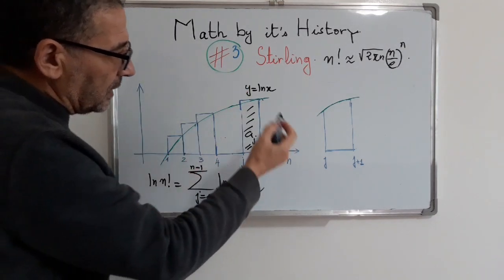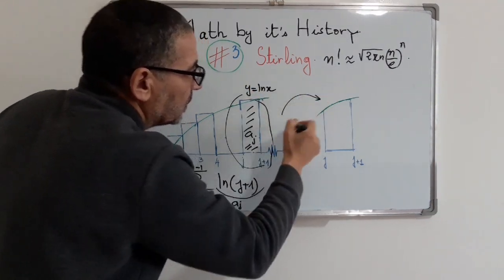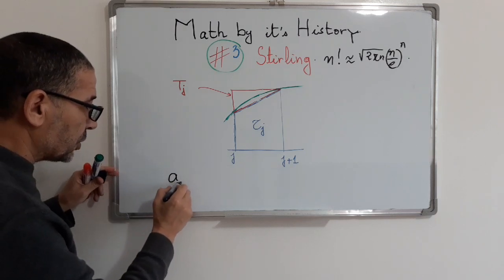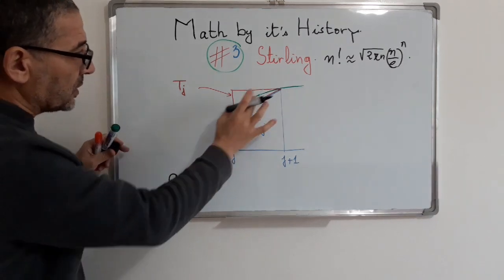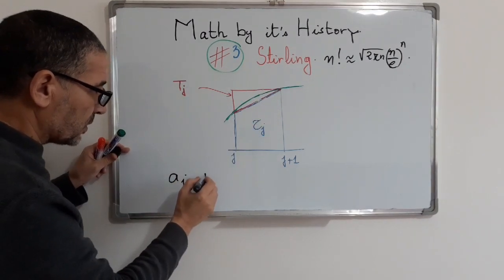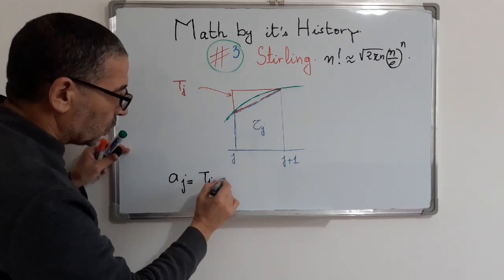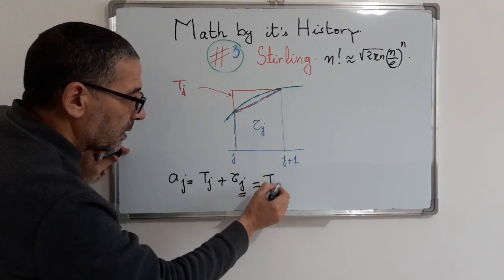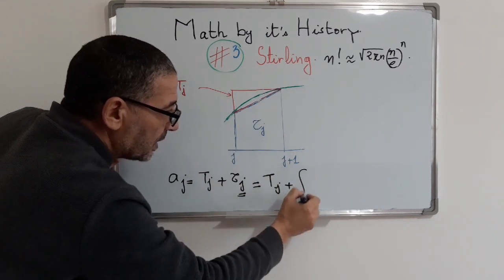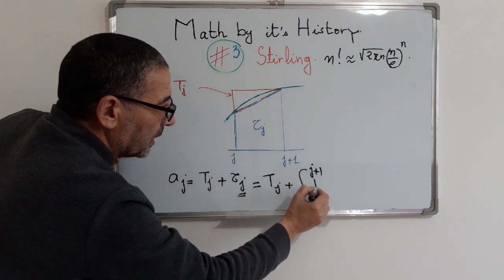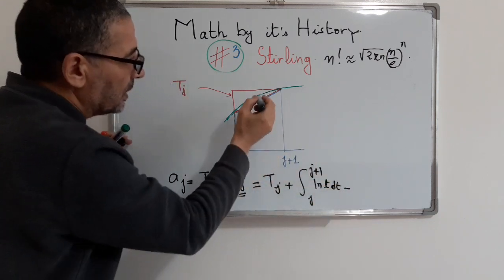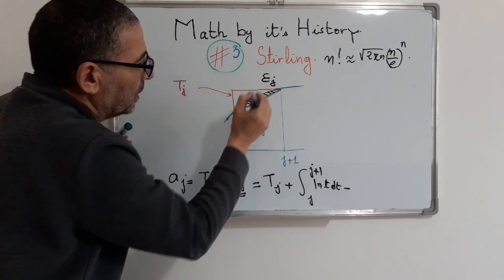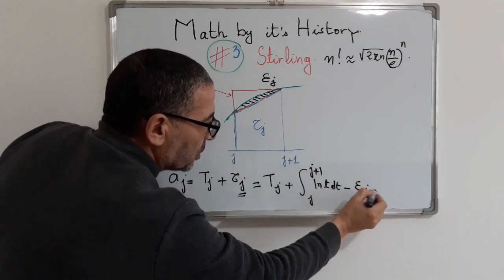To explain this clearly, we have a rectangle here. The area h_g equals the red top triangle t_j plus the trapezoid t_j. This trapezoid equals the area under the curve from g to g+1 of ln(t) dt, minus an overlapping term, which we denote epsilon_g.